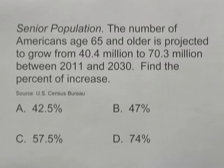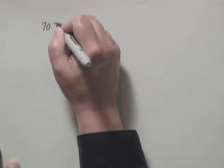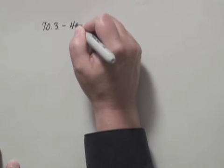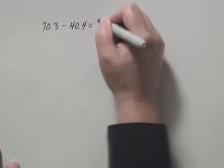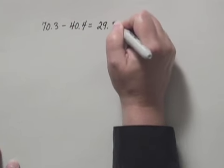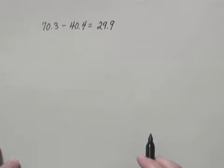To find the percent of increase we start by finding the amount of increase. So we subtract 70.3 minus 40.4 and we get 29.9. So the number is expected to grow by 29.9 million.